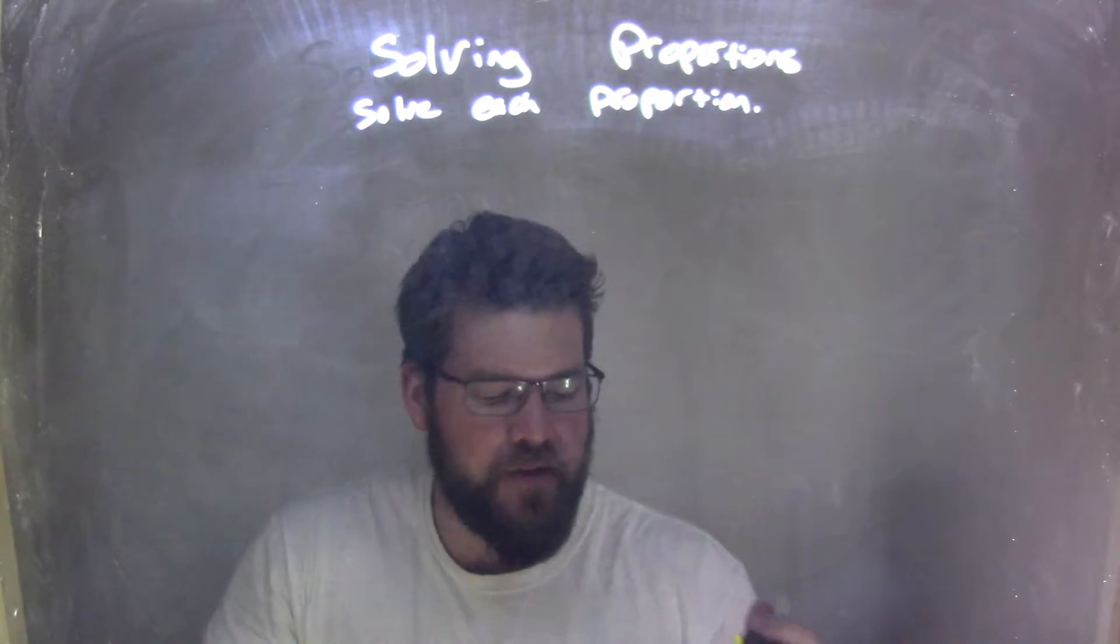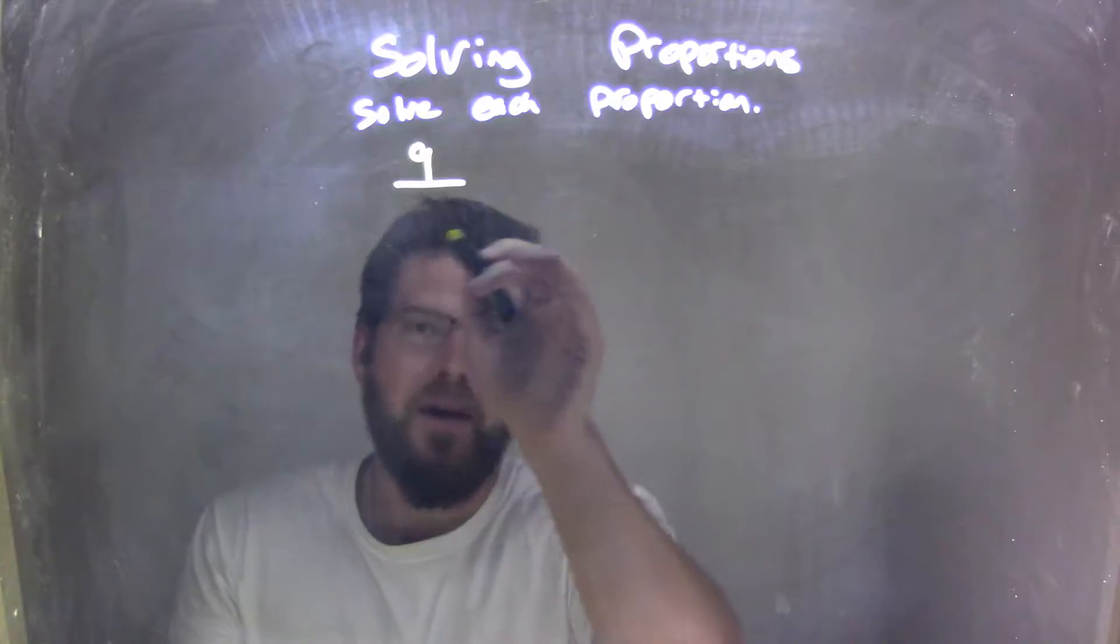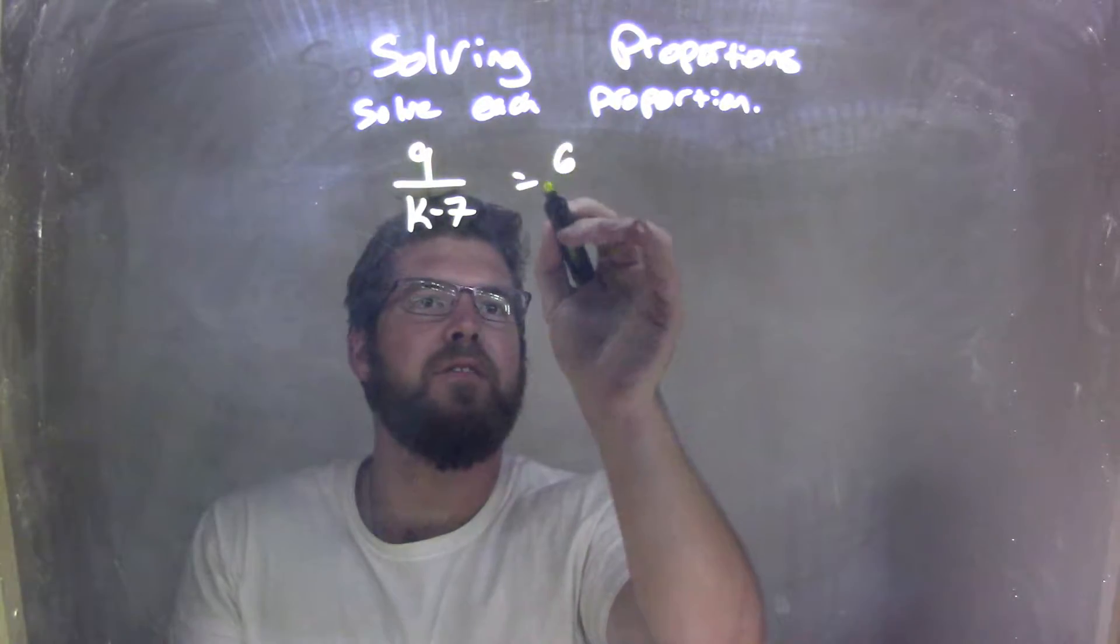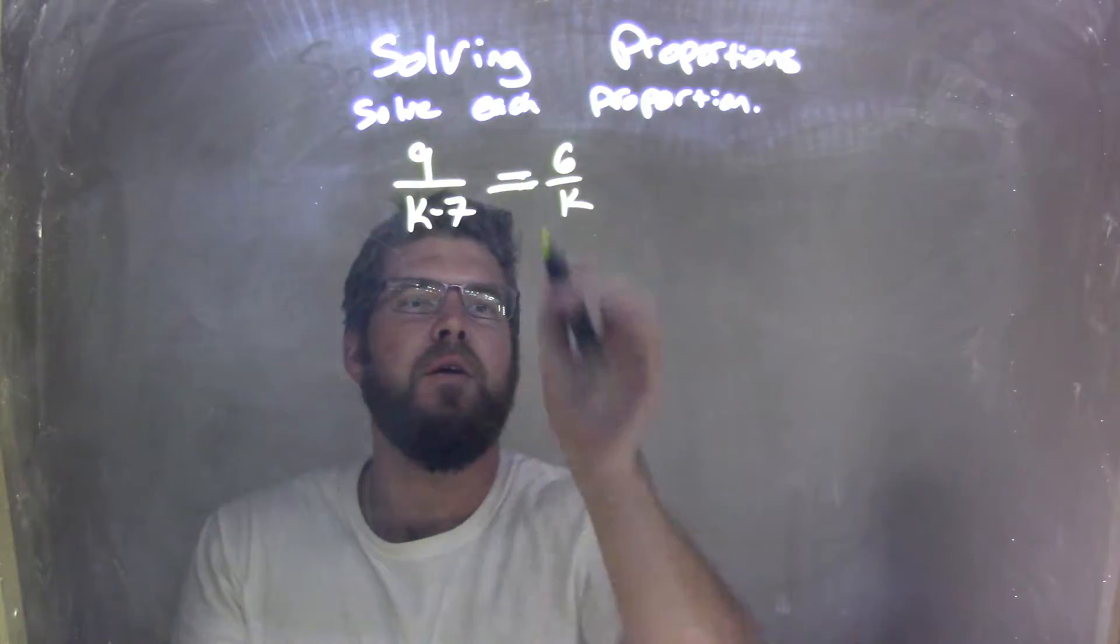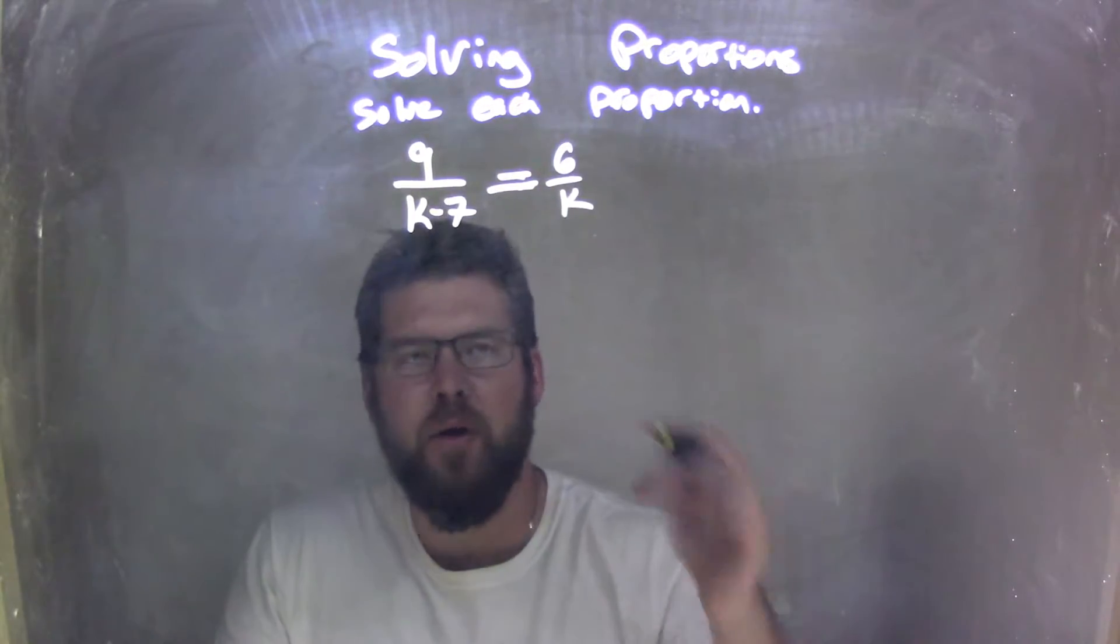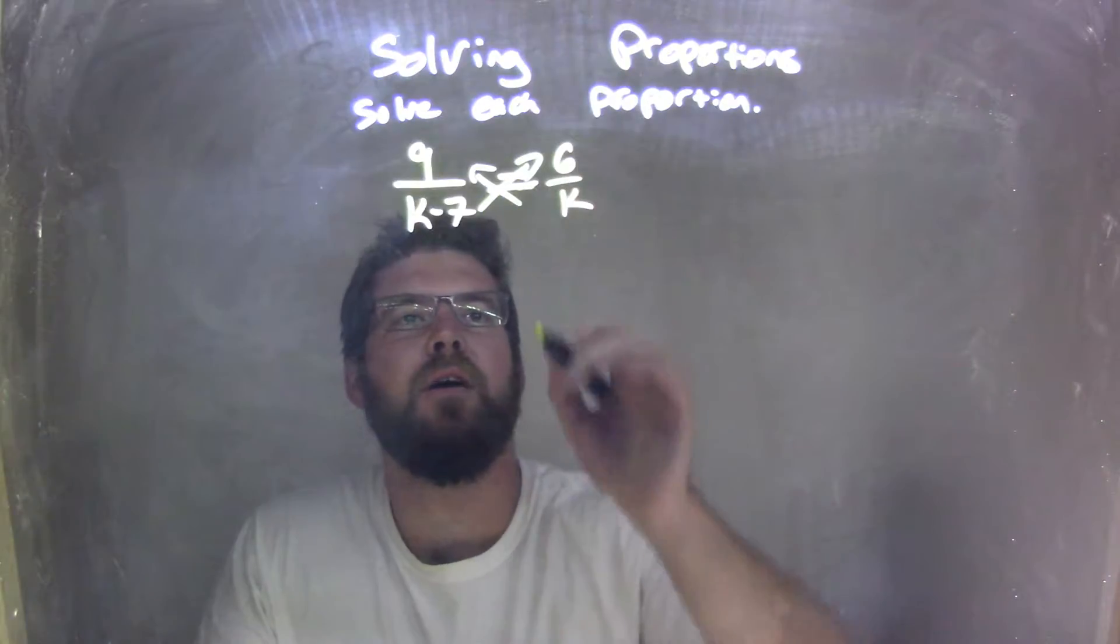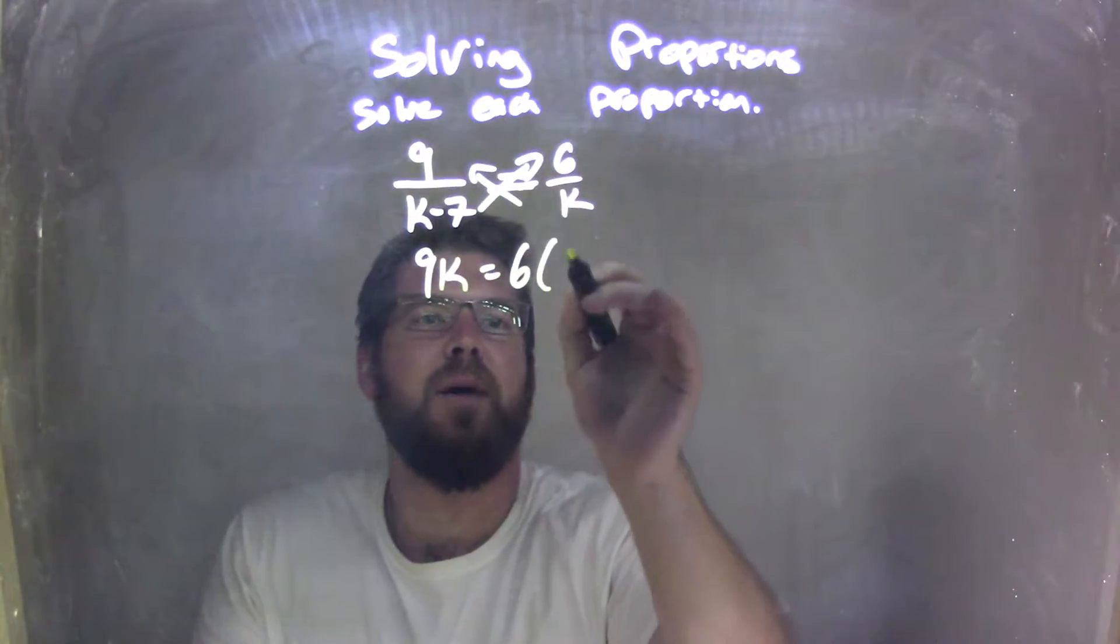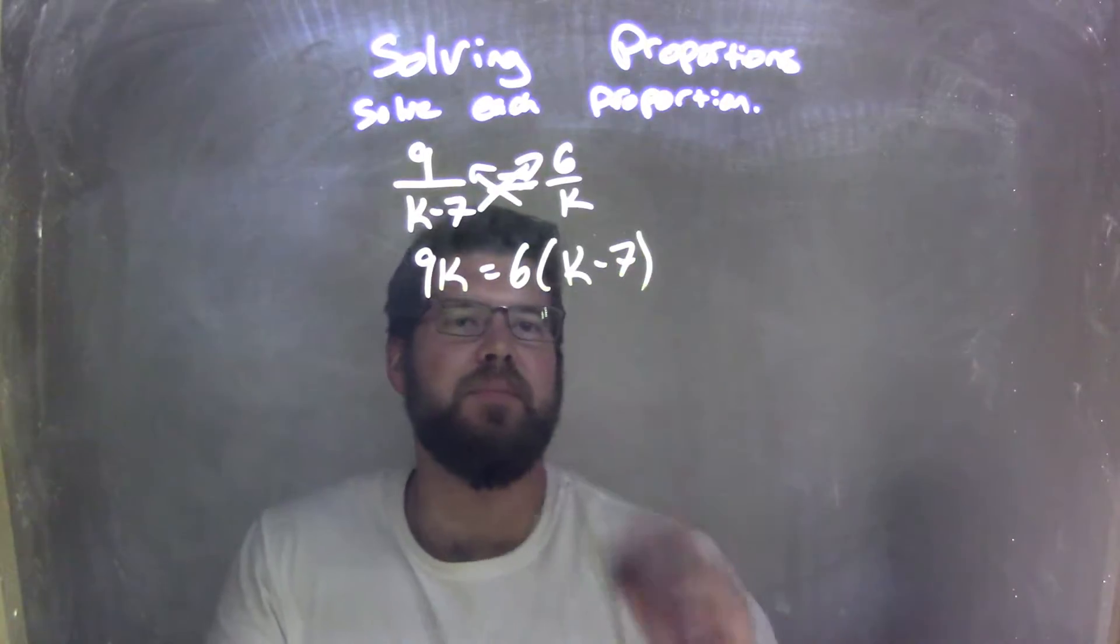If I was given this proportion, 9 over k minus 7 equals 6 over k, well, first step, I need to, like always, cross-multiply. Cross-multiply here. 9 times k is 9k, and I'm given 6 here times k minus 7.